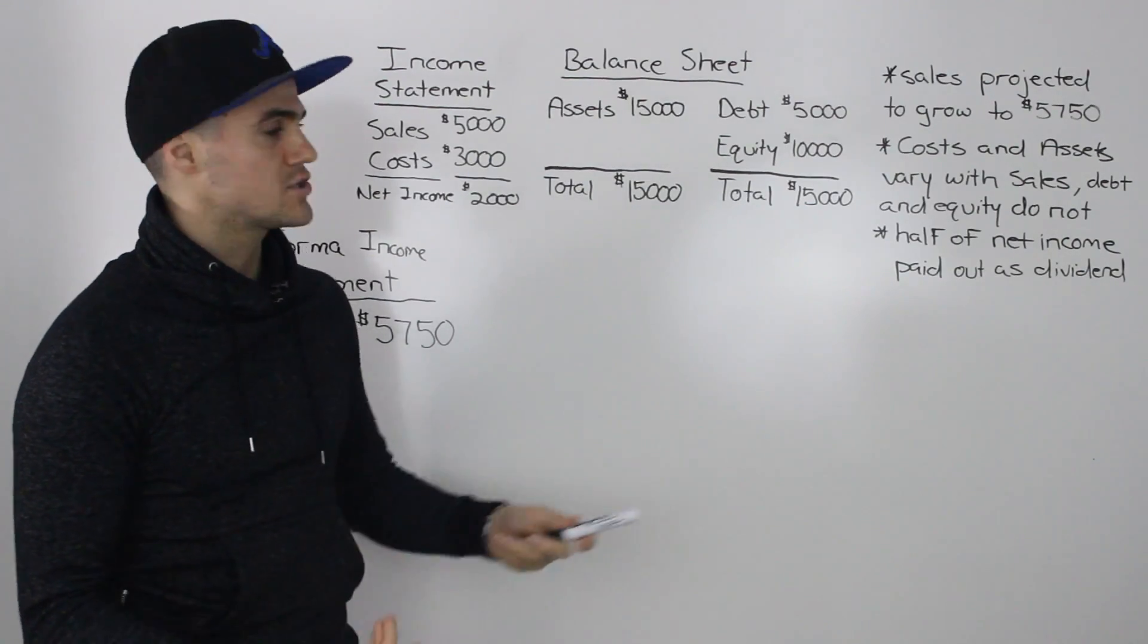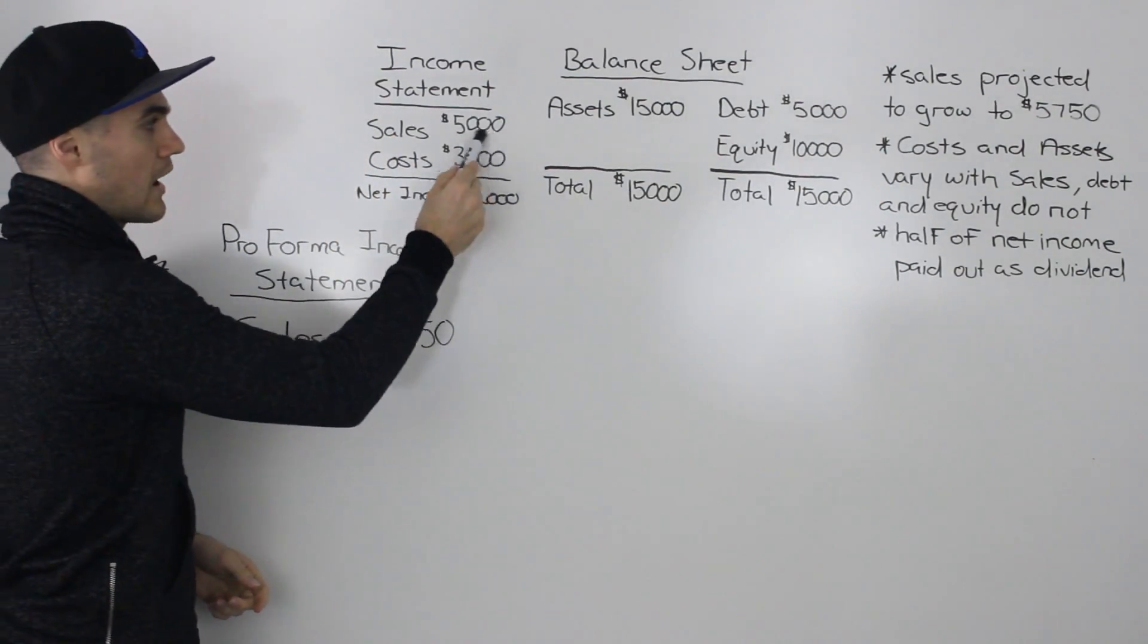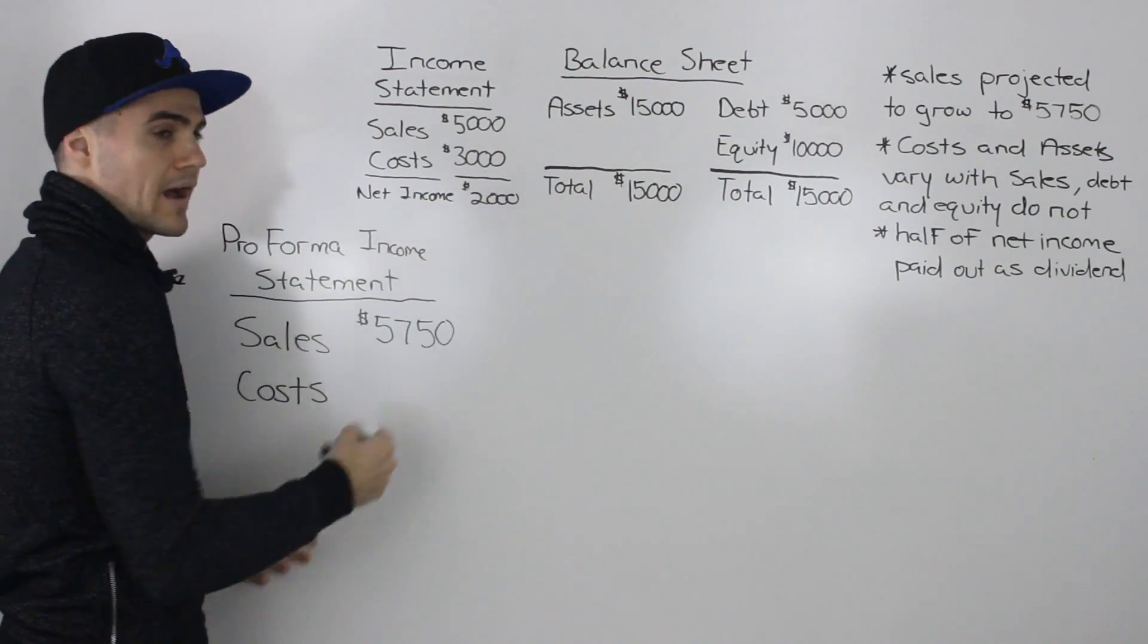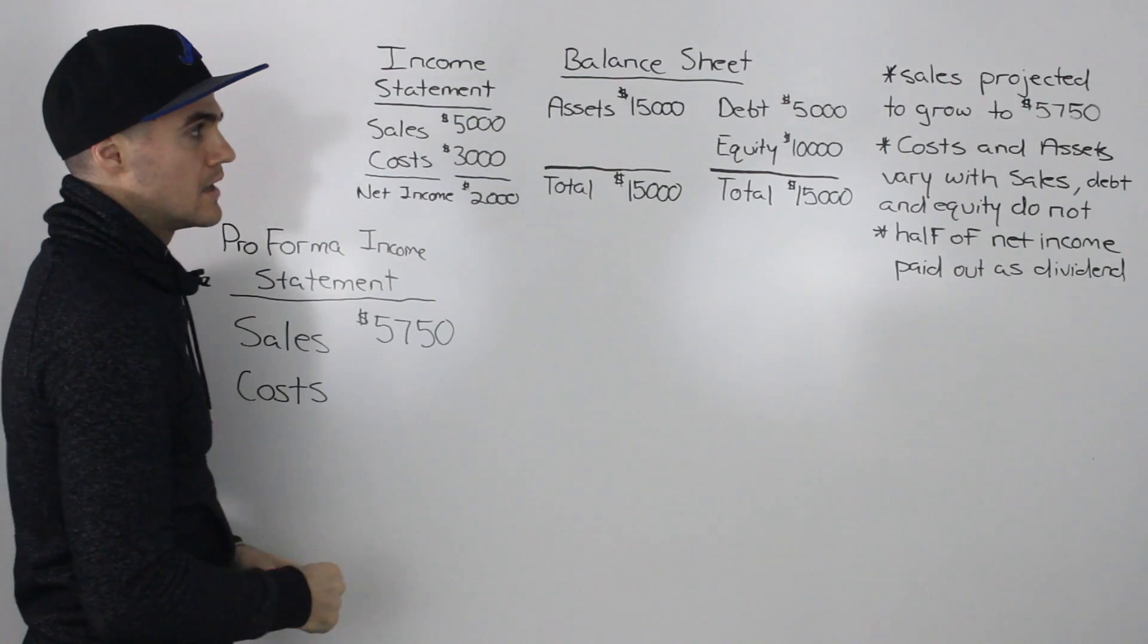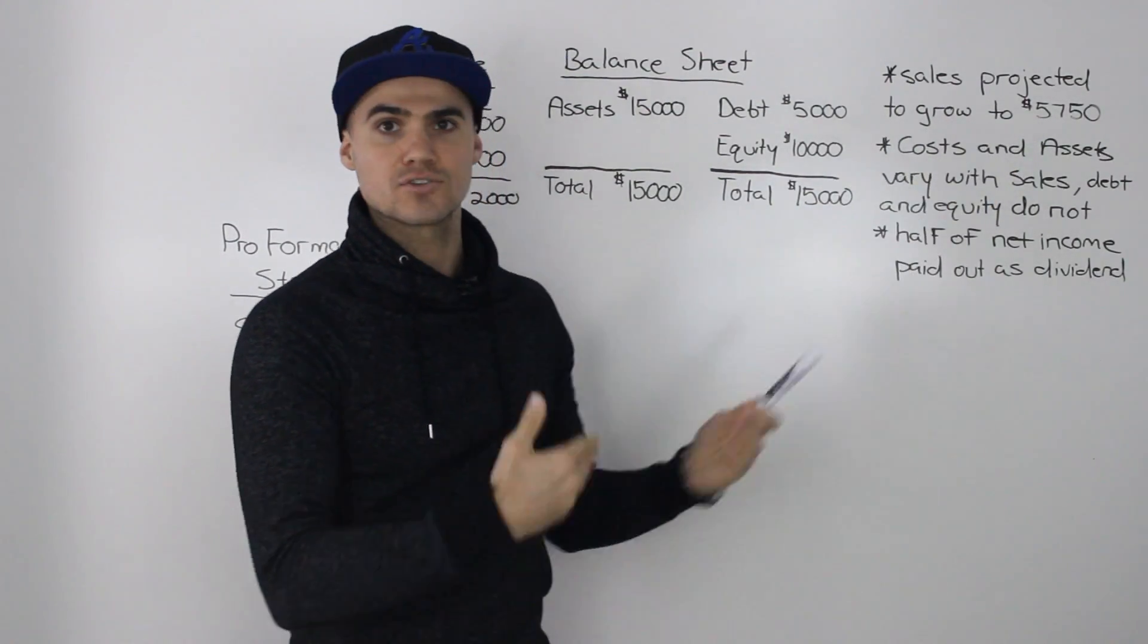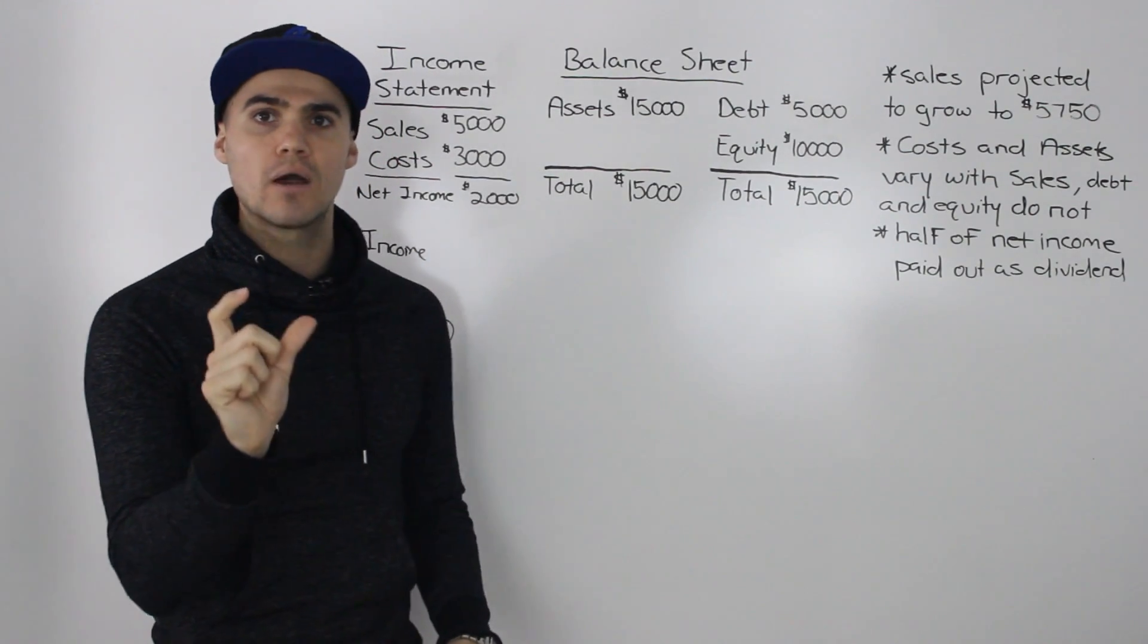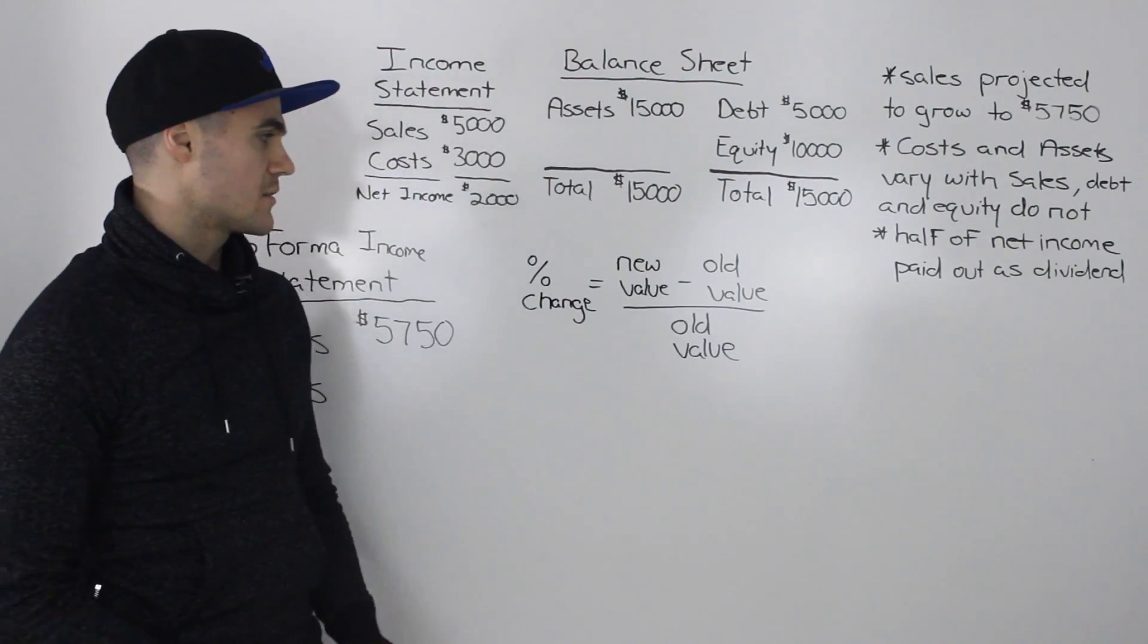Because if we knew the percentage, since costs are proportionate to sales, we can then just multiply our old costs by that percentage growth and get our new forecasted costs. But in this case, we're only given the absolute value that the sales grow to. So we have to figure out what that percentage increase is.